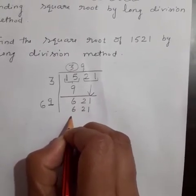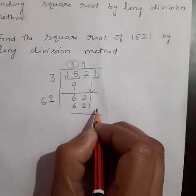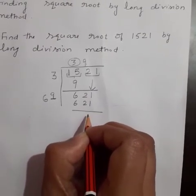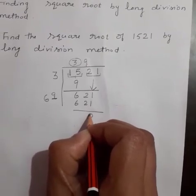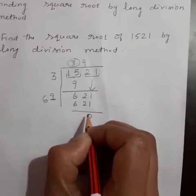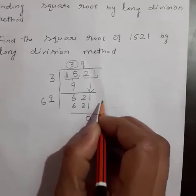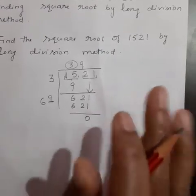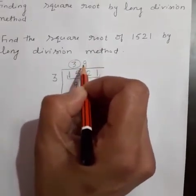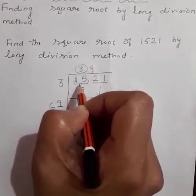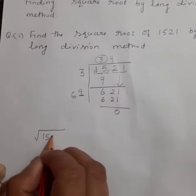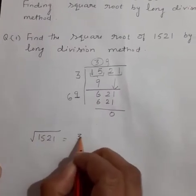Subtract the product of the new divisor and the new digit from the new dividend. The remainder is equal to 0. Since the remainder is 0 and no period is left, we stop. The current quotient is the square root of this number. That is, the square root of 1521 is equal to 39.